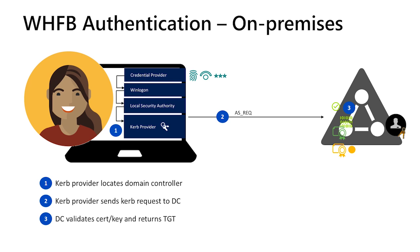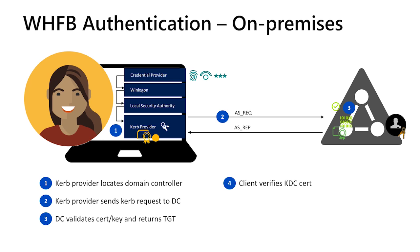Once the domain controller confirms the validity of the AS-REQ, it will generate a Ticket Granting Ticket, or TGT, which can be used for future authentication requests to the KDC. That gets sent back to the client in another Kerberos message called an AS-REP. The Kerberos provider on the client verifies that the message it received is valid by using the KDC certificate included in the AS-REP, confirming it chains to a trusted root and is for the correct domain. It will then pass the TGT to the Local Security Authority, which will cache it for future authentication requests. For future authentication to on-premises resources, the TGT can be used without the user having to provide a gesture, giving them SSO to any on-premises resources.